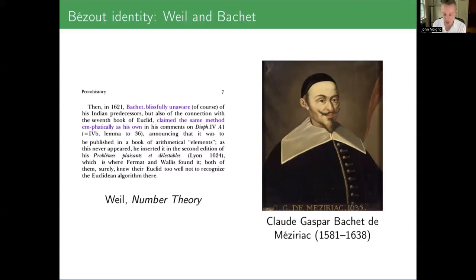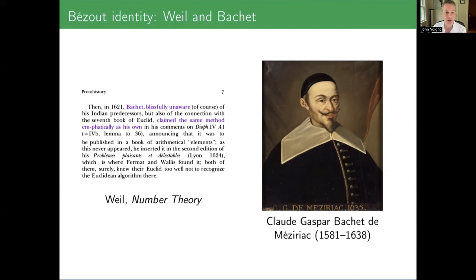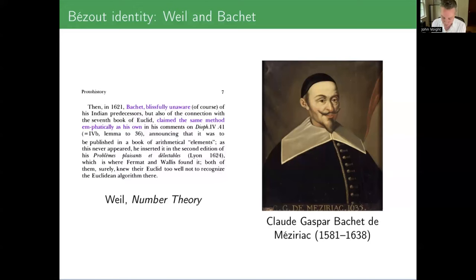I have one other fun anecdote. I don't know why in number theory and mathematics there are so many things named for the wrong person. They notes one other place: where was it first written down in some kind of classical notation, not measuring in terms of lengths after Euclid? This is Bachet — Claude-Gaspar Bachet de Mézirac. And they note that Bachet, blissfully unaware of the work of Euclid and his Indian predecessors, claims this method for writing AU minus BV equals one. He does a bit more actually, getting a complete parameterization. So maybe another person we could attach to the project would be Bachet.